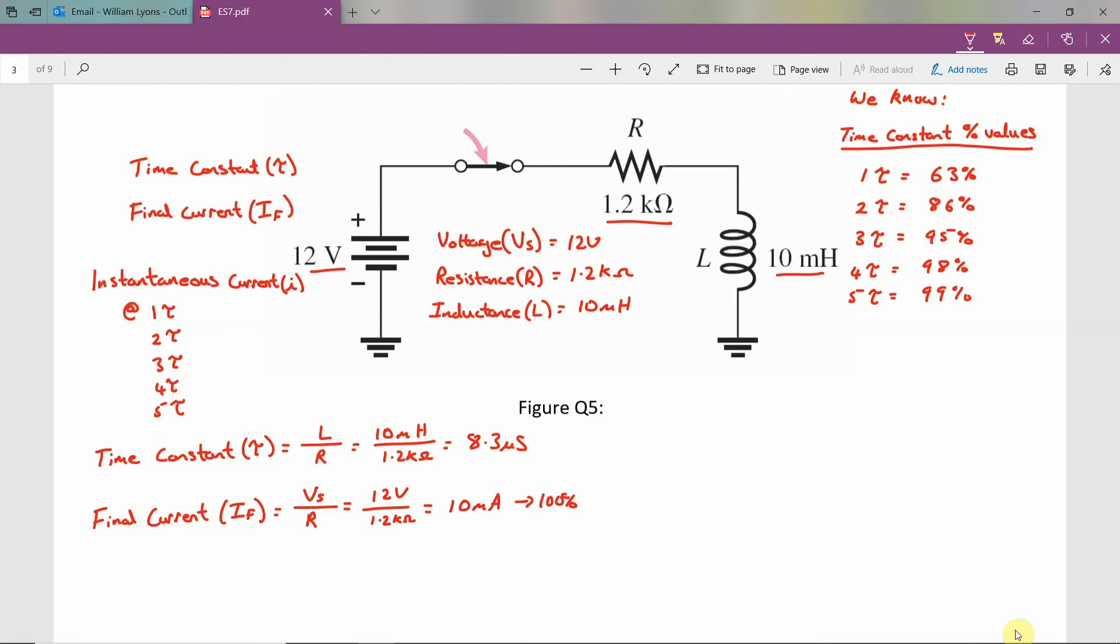So to calculate the current that's present at the first time constant 1τ, we calculate the instantaneous current equal to your final current multiplied by your percentage value at 1τ. In this case, 63% is represented by 0.63, so it's 10 milliamps multiplied by 0.63, which gives you a value of 6.2 milliamps at a time value of 8.3 microseconds.